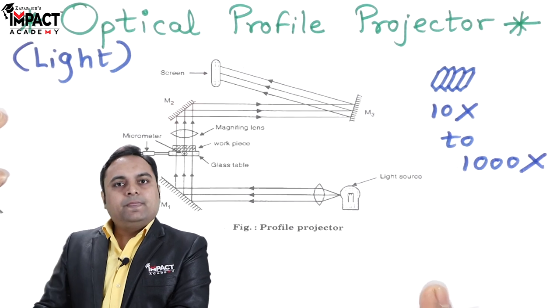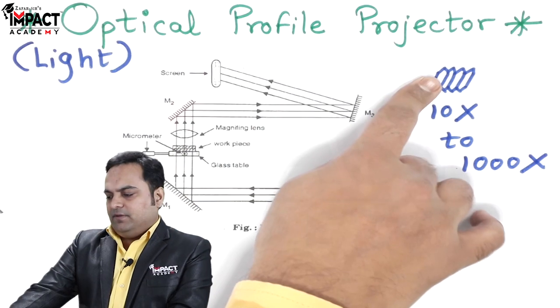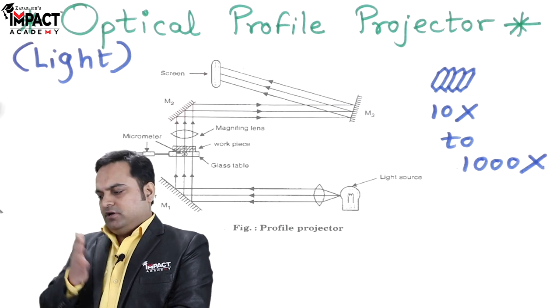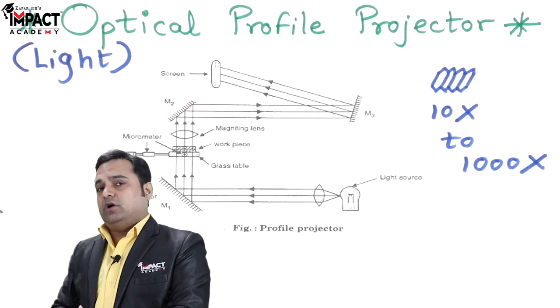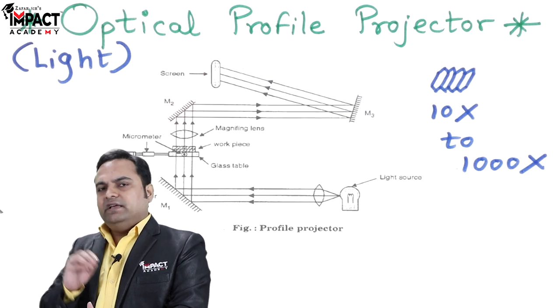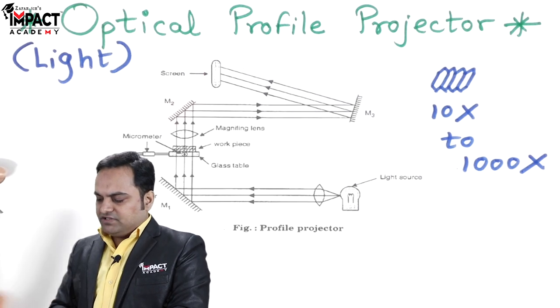This means the same image would be projected 10 times bigger in size, or maximum it can go up to 1000 times, so we can easily pick up the defects.